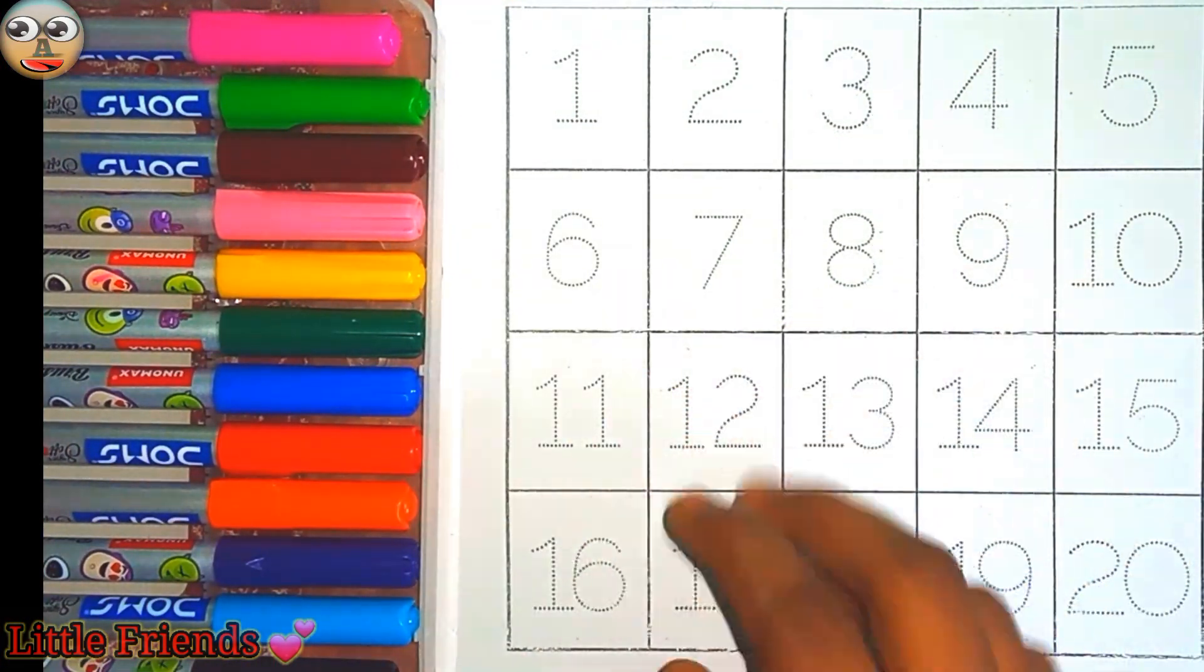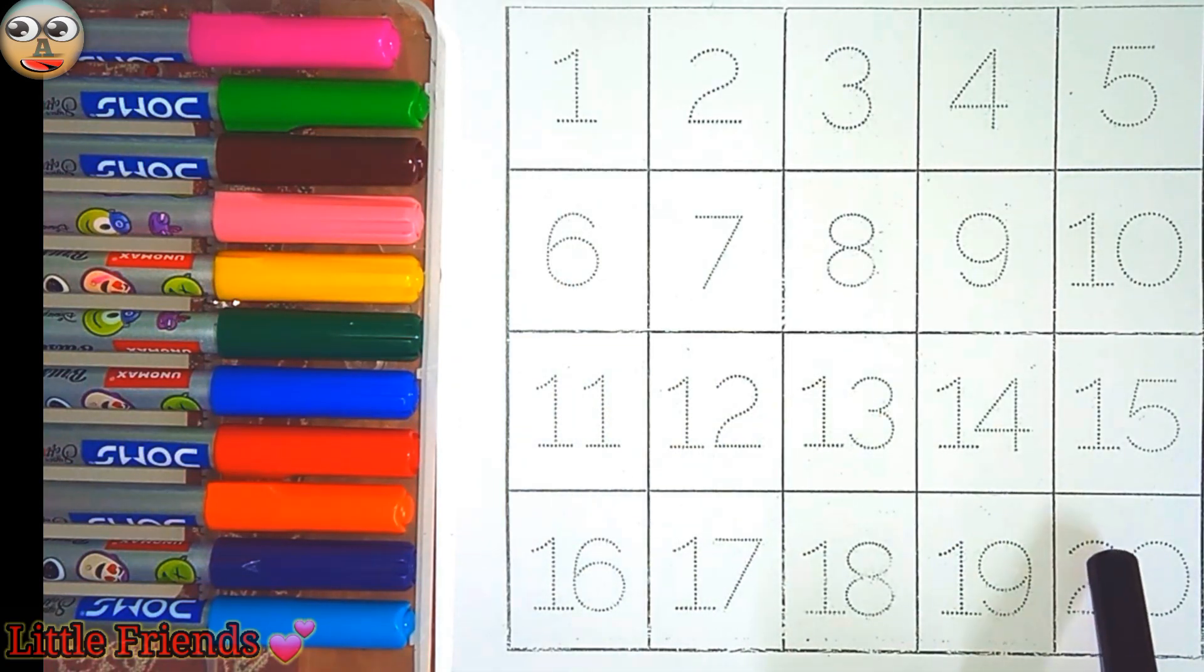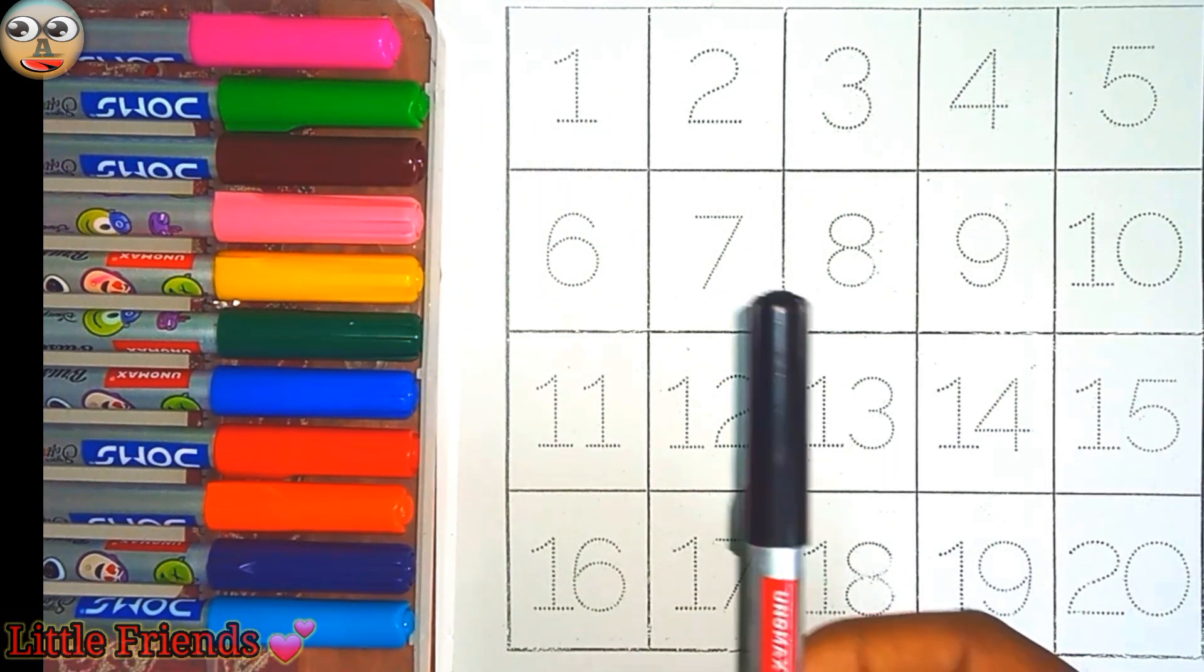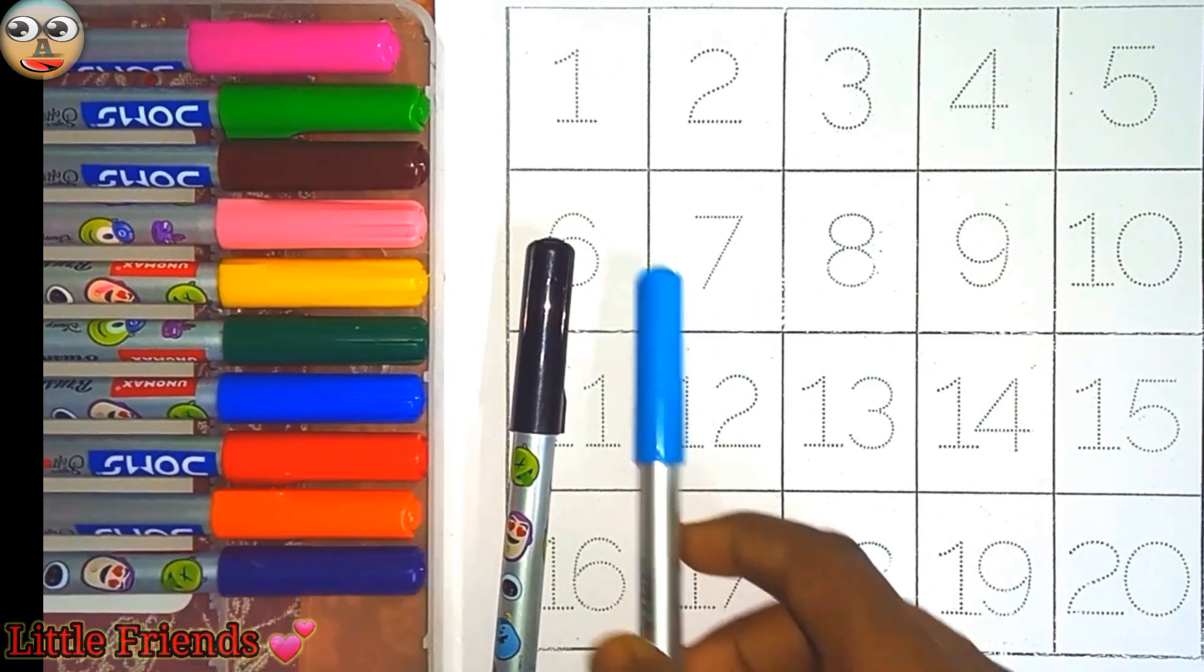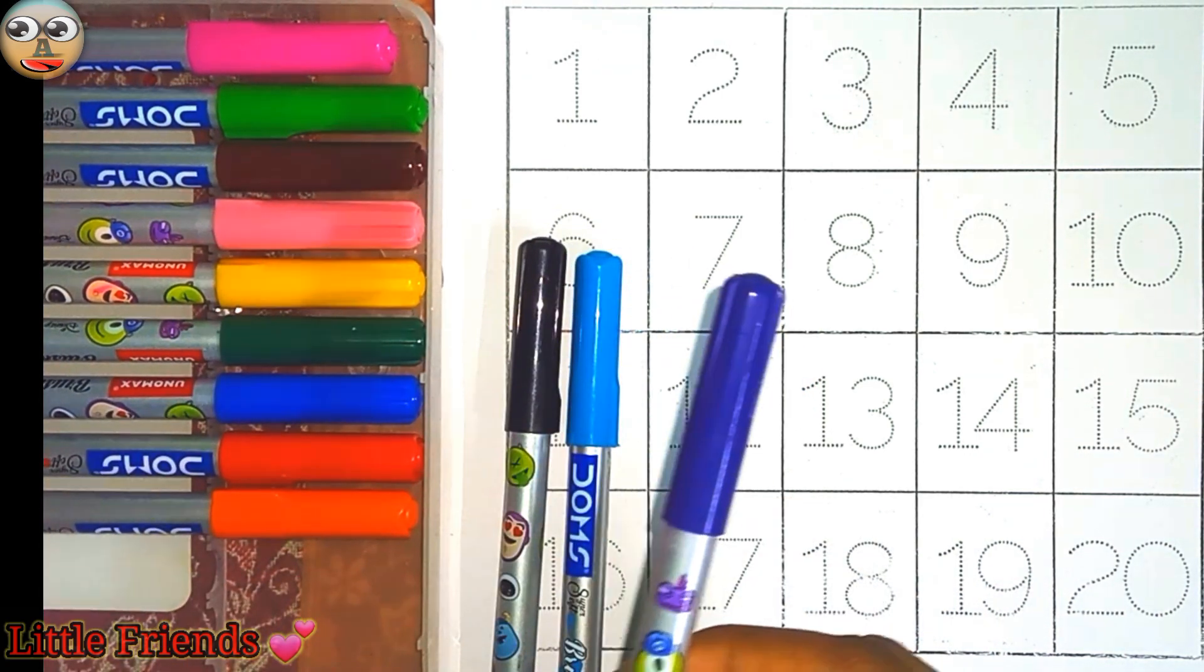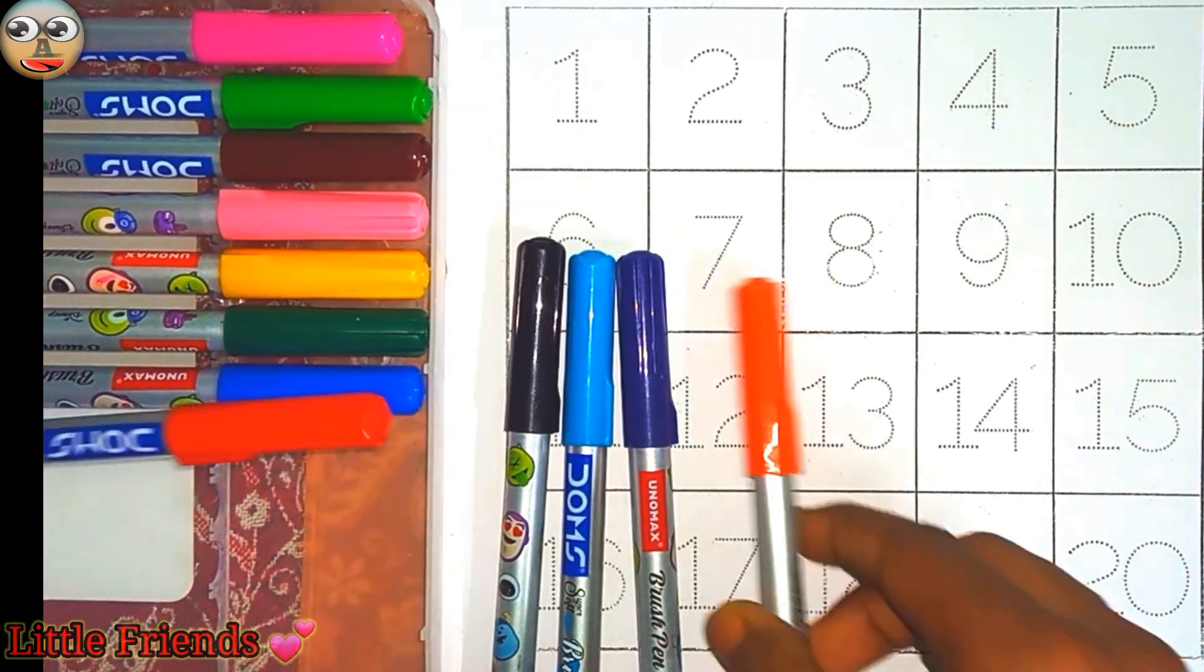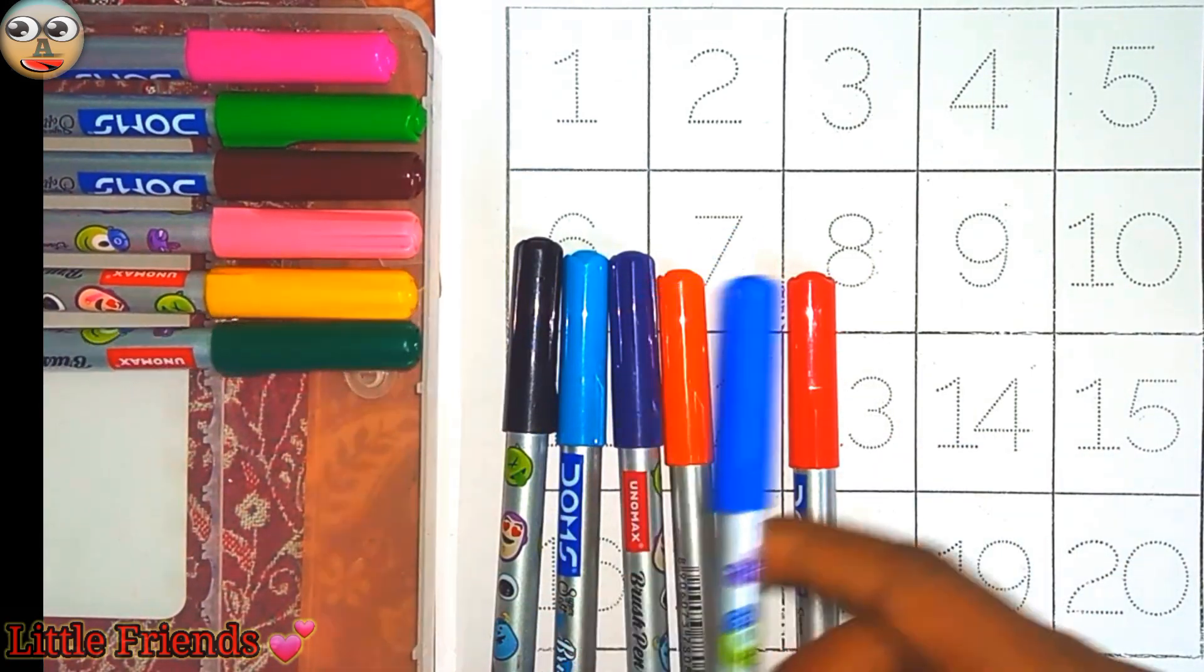Hello kids, today we will count from 1 to 20. Let's know the colors name. This is black color, this is sky blue color, this is purple color, this is orange color, this is red color, this is blue color.